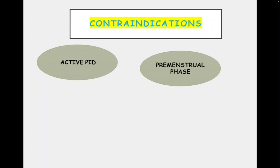Why will we not do SIS in the premenstrual phase? Because the patient can be pregnant, and we do not want to dislodge that pregnancy. Although SIS is ultrasound-guided, unlike HSG where there is radiation exposure, there is no radiation with SIS. But if pregnancy has occurred, we do not want to affect it. So we will avoid any procedure in the premenstrual phase.